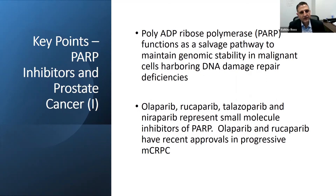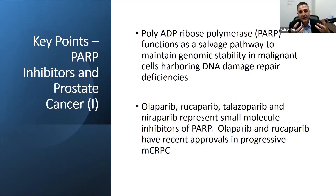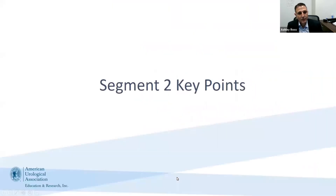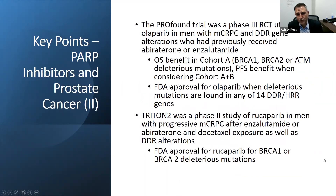To summarize this first section: PARP functions as a salvage pathway to maintain genomic stability in cells that harbor DNA damage repair deficiencies. The cancer cell has upregulated PARP to maintain the genome. Multiple drugs — Olaparib, Rucaparib, Talazoparib, and Niraparib — are small molecule oral inhibitors of PARP that may be the Achilles heel for some cancers. Olaparib and Rucaparib have recent approvals for progressive metastatic castrate-resistant prostate cancer. That brings us to our next segment, discussing specifically the clinical trials for PARP inhibitors in prostate cancer.